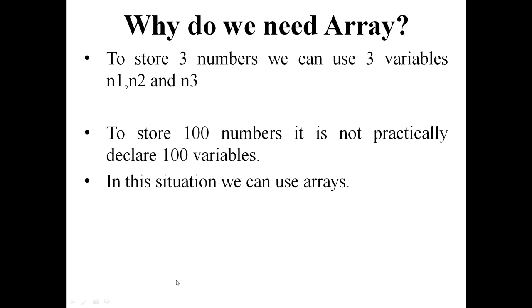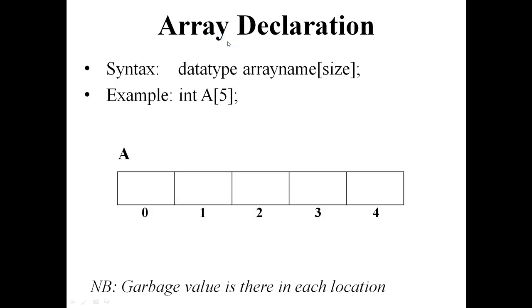Suppose 100 integer numbers need to be stored. The syntax for array declaration is: data type, array name, size, semicolon. For example, int a[5]. Here, a is an integer array of size 5. The index is from 0 to 4.